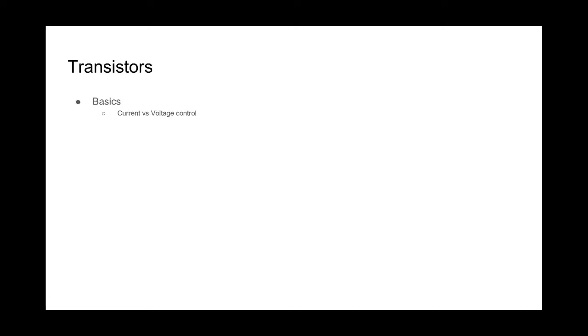Let's get into transistors. A transistor is a very powerful tool — it allows us to control a larger current or larger voltage with a much smaller input. They come in two main varieties: you have n-type or p-type. Before we get into those, let's look at the symbols and explain them.